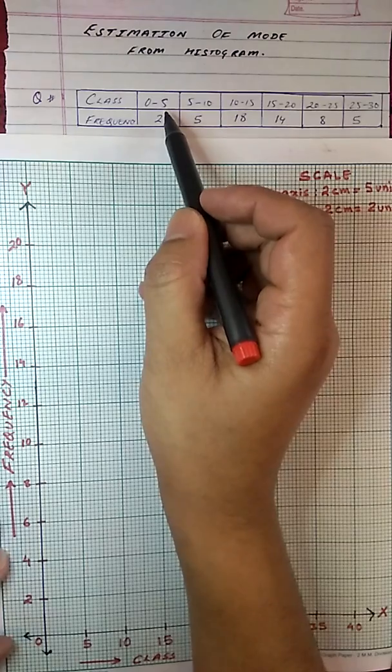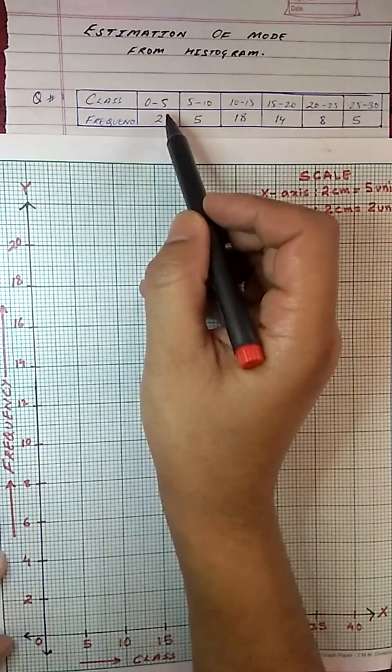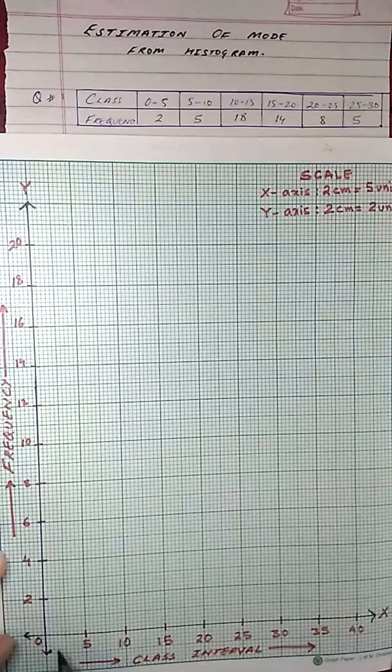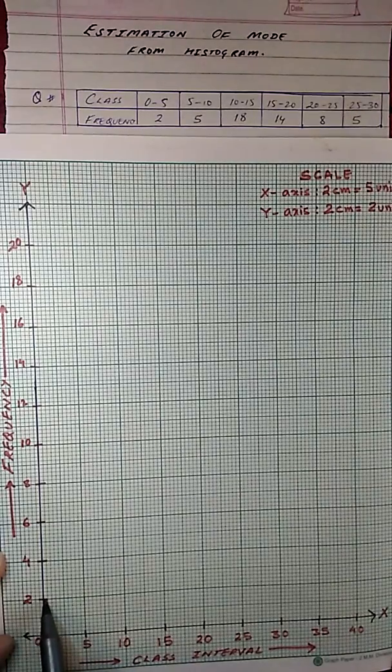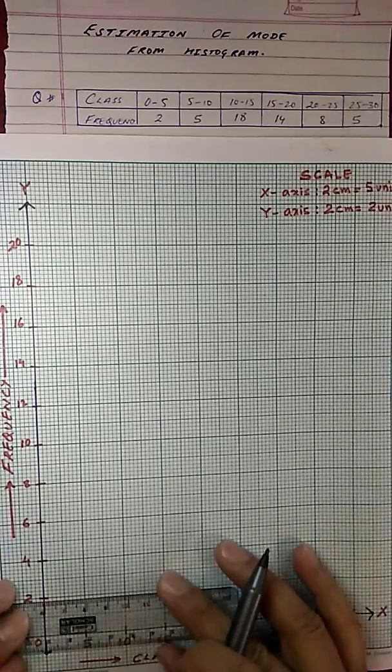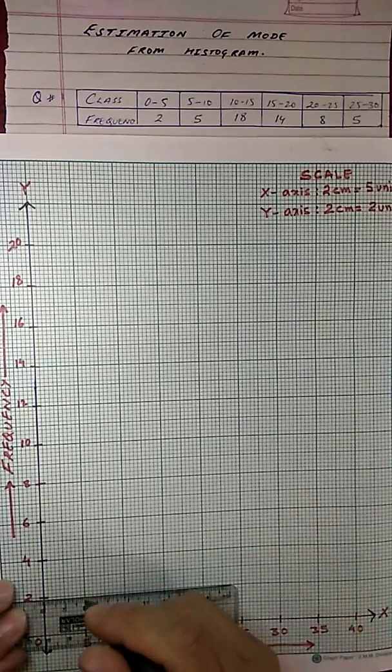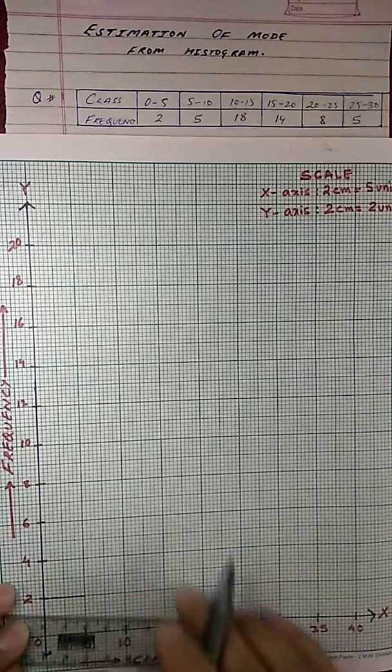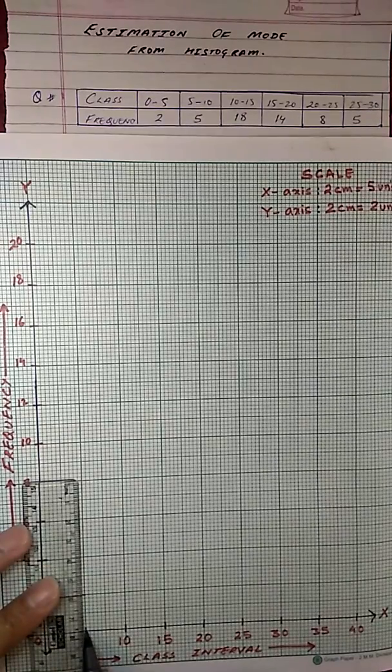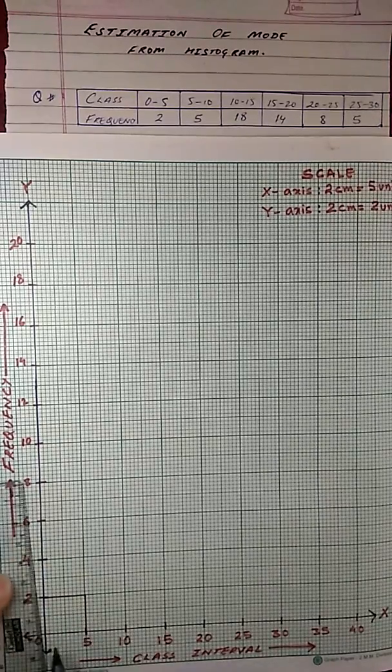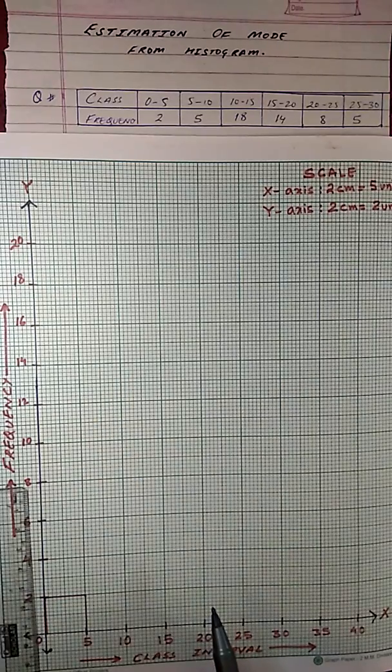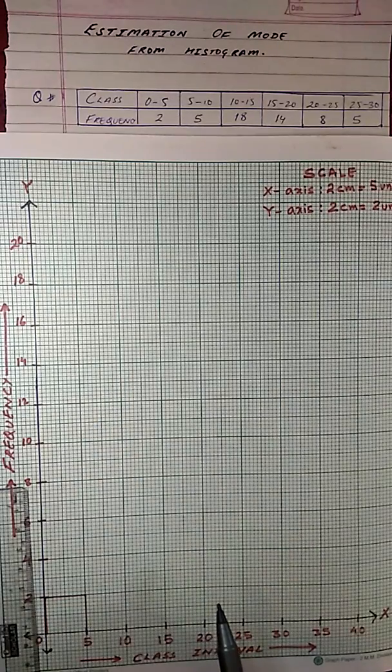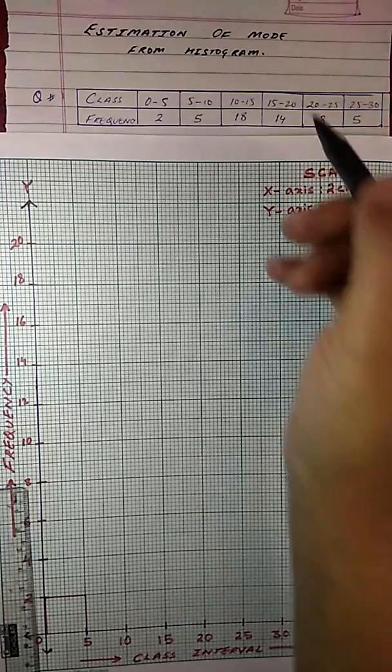First let me mark this one. From 0 to 5, the frequency is 2. That means my block will be of height 2 units. So let me complete this here. So this is my block for the first class interval and the corresponding class frequency.